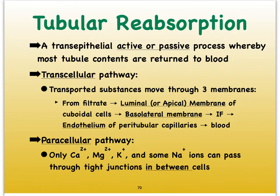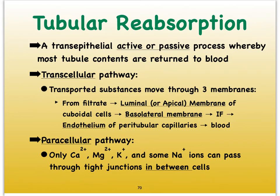The processes by which this occurs might be either active or passive. Sometimes solutes and solvents will use the so-called transcellular pathway, where our solute and water pass through the actual epithelial cell. But at times, water and some electrolytes can sneak in between our cuboidal cells that make up the proximal convoluted tubule. There we find tight junctions, but these particles are small enough to sneak through them. We call this the paracellular pathway — going essentially outside of the cells.